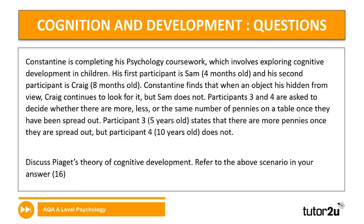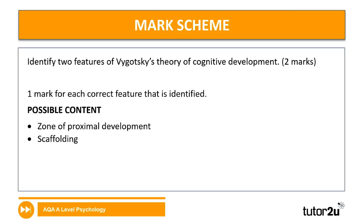Mark scheme for cognition and development. First two-marker — identify features of Vygotsky's theory: a mark for each correct feature identified. Examples include zone of proximal development and scaffolding. Because the command word is identify, we just need to state the correct features — no explanation required.